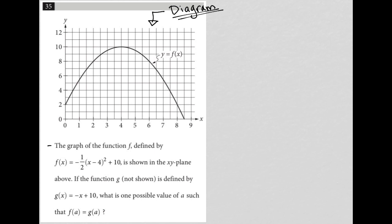The question says the graph of the function f defined by f of x equals negative one half x minus four squared plus ten is shown in the xy plane above. We see our y equals f of x. If the function g not shown is defined by g of x equals negative x plus ten.